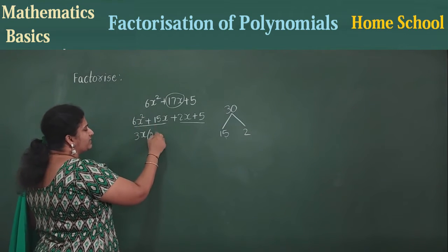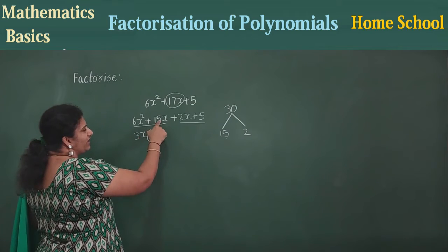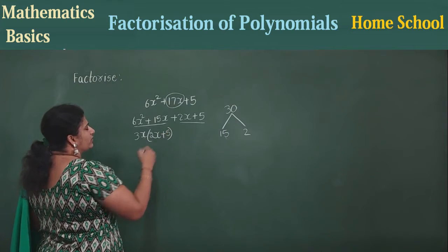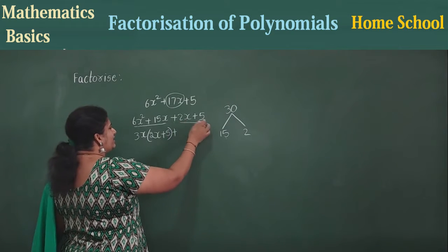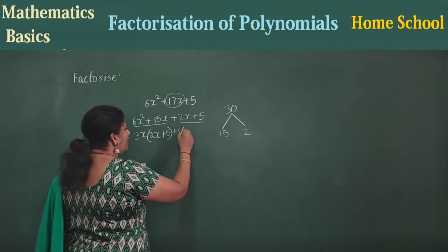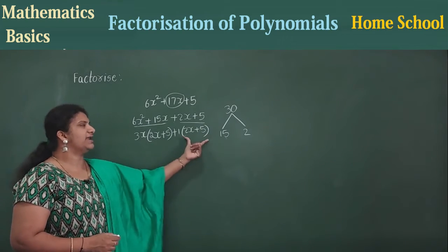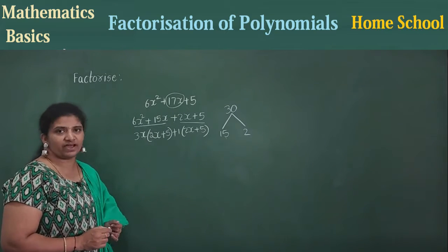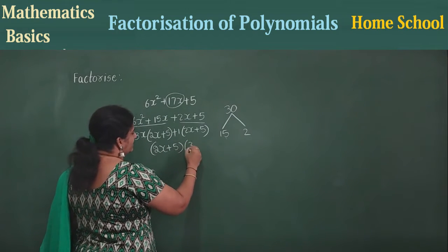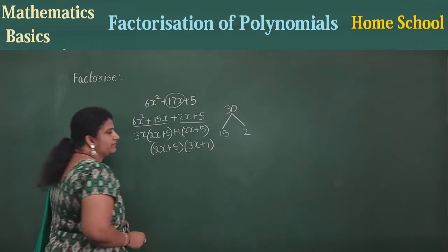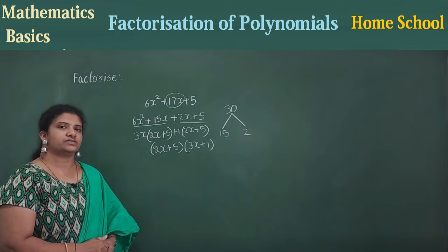So take 3x out as common: 3 twos are 6, so 2x inside; 3 fives are 15, so plus 5 inside. Now for the last two terms, nothing is common, so write 1 times (2x + 5). Now consider both groups: 2x + 5 is common. If 2x + 5 is taken out, what is left? 3x in brackets, plus 1. So the factorized form is (2x + 5)(3x + 1).